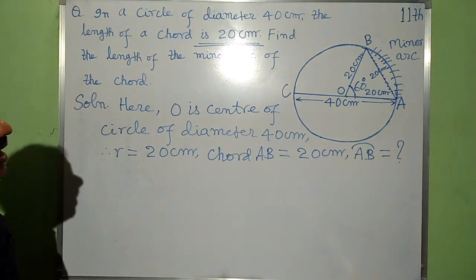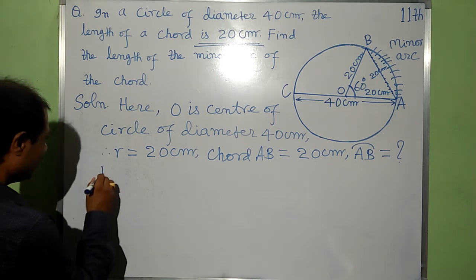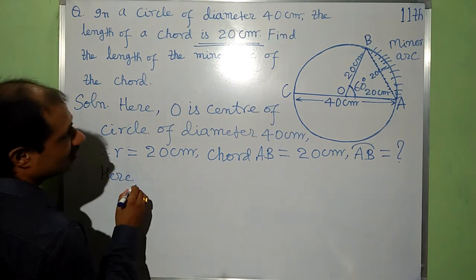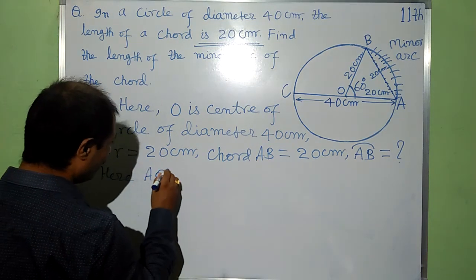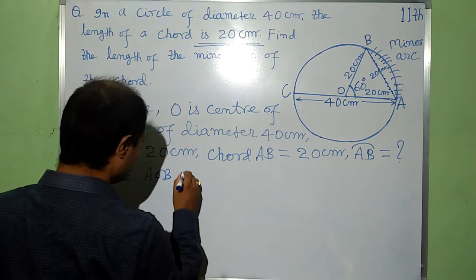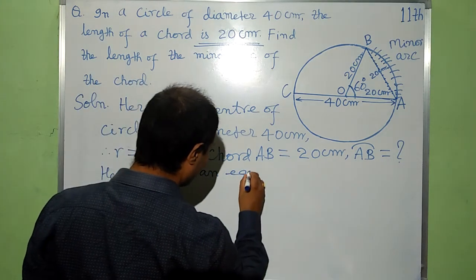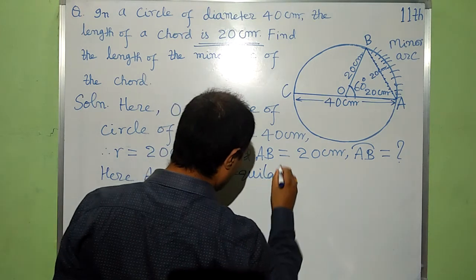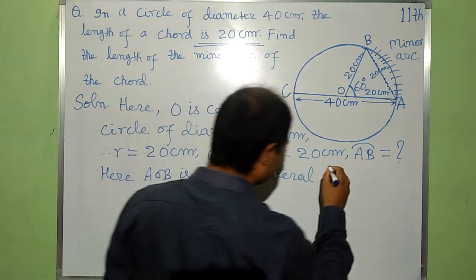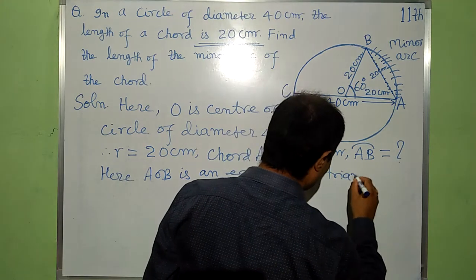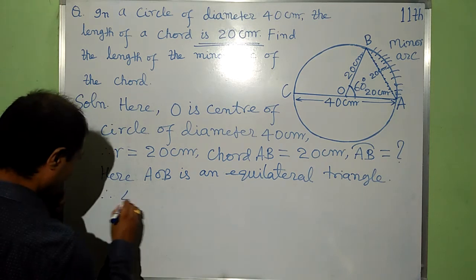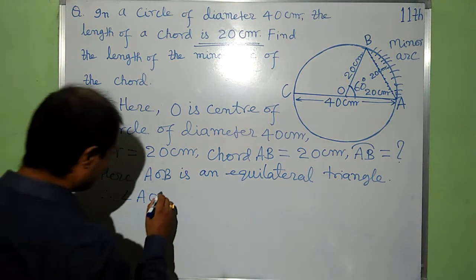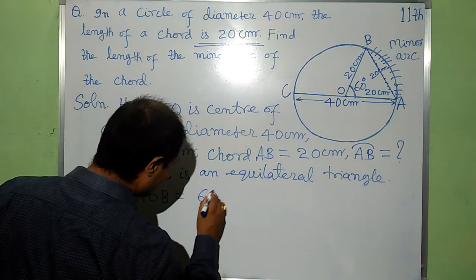Theta is L by R when theta is in radians. Here, AOB is an equilateral triangle. Hence, angle AOB is equal to 60 degree.